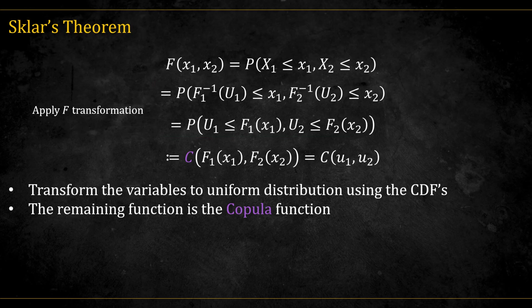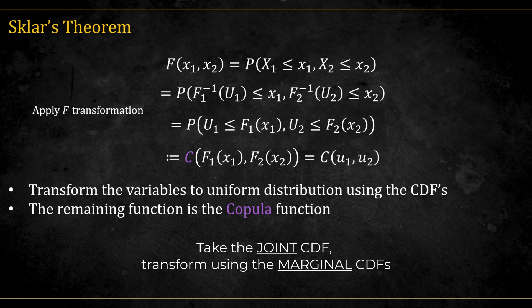We then apply the F transformation on both sides, and we get this. Essentially what we've done is a simple variable transformation. The resulting function is called the copula function. That's it. That's simple. Take the CDF, transform the variables using the CDF, and you're done.